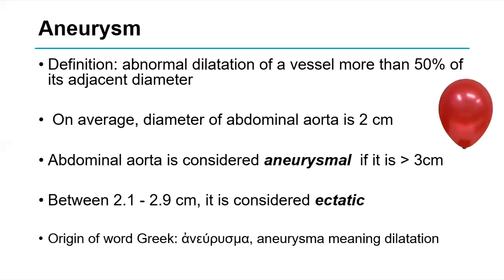An aneurysm is an abnormal dilatation of a vessel more than 50% of its adjacent diameter. The average diameter of the abdominal aorta is around 2 cm, and it is considered aneurysmal if more than 3 cm. Between 2.1 and 2.9 cm we call it an ectatic aorta. For those who love trivia, the word aneurysm originates from the Greek word aneurysma, meaning dilatation.